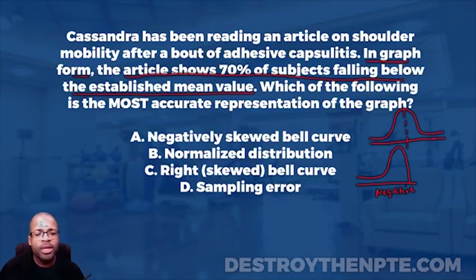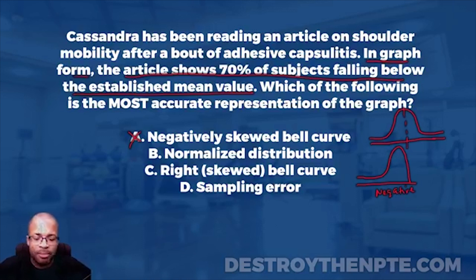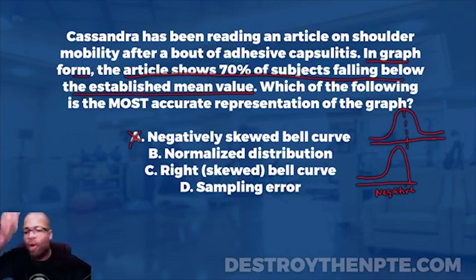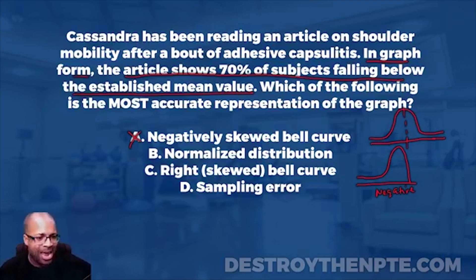Answer B says normalized distribution. That's the traditional bell curve you'd see a lot in PT school — mean, median, and mode right on top of each other, right down the middle. Is that what's going on in this question? Absolutely not. We can eliminate B.